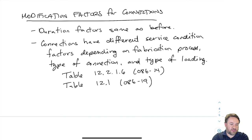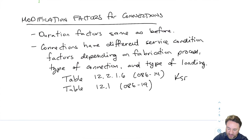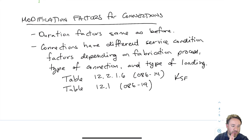For connections, we talked about modification factors in beam design — duration factor, treatment factor, system factor. The duration factor KD is the same as before; it depends on the duration of loading. KH doesn't apply in the same way, but we do have service condition factors — the KS factors. For fasteners, we have KSF, the service condition factor for fasteners, found in a separate table in Chapter 12, where all connection design details are in the standard.